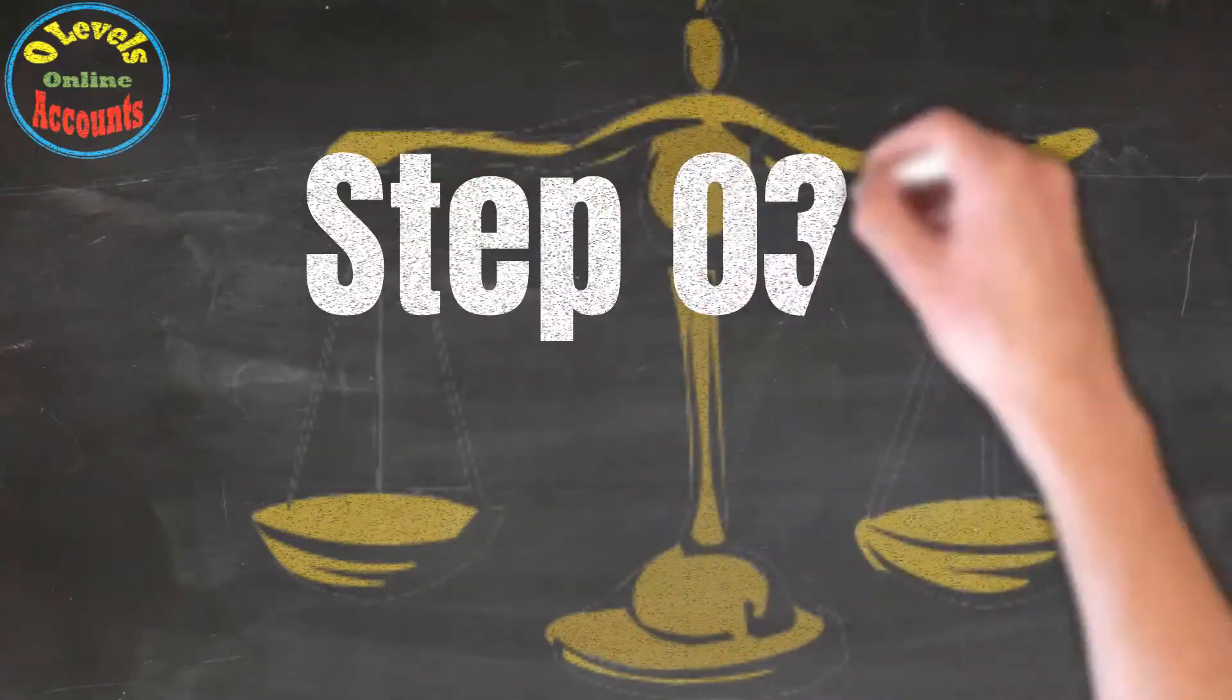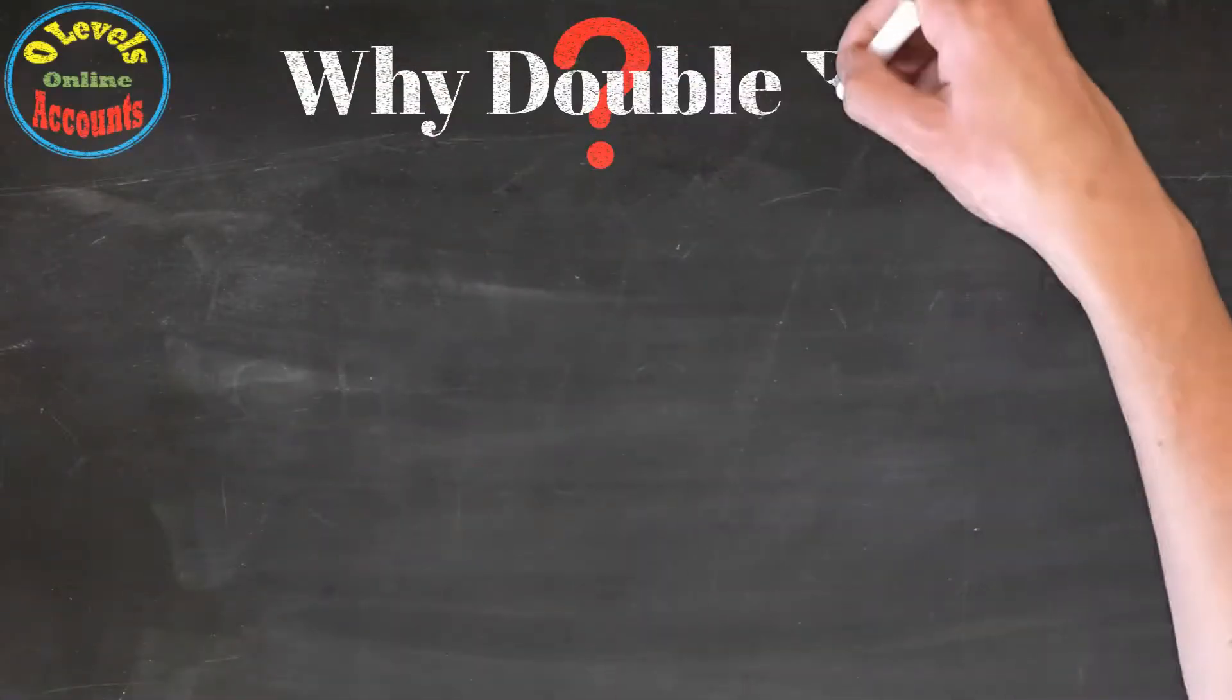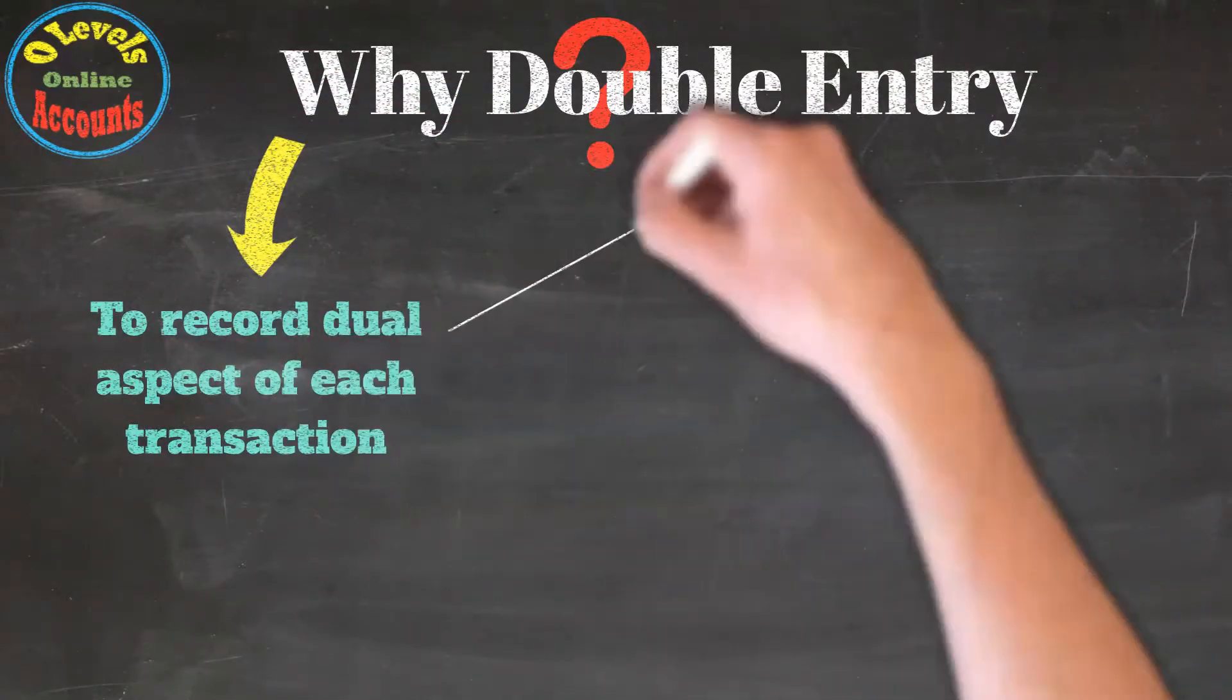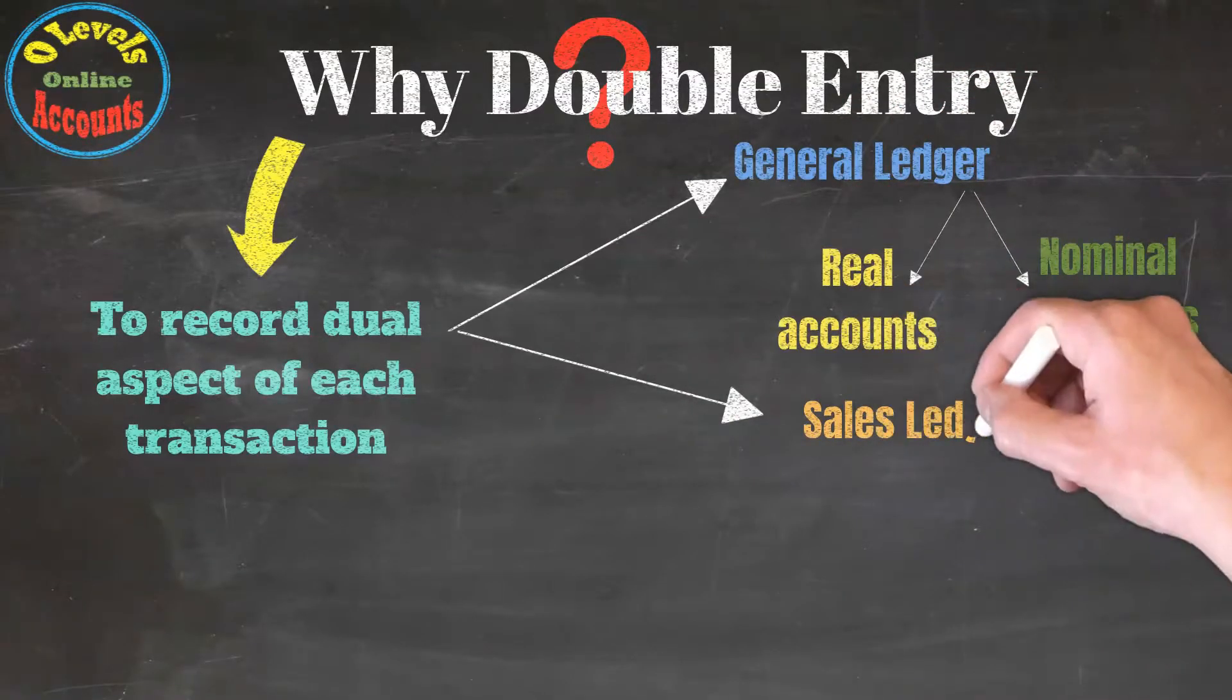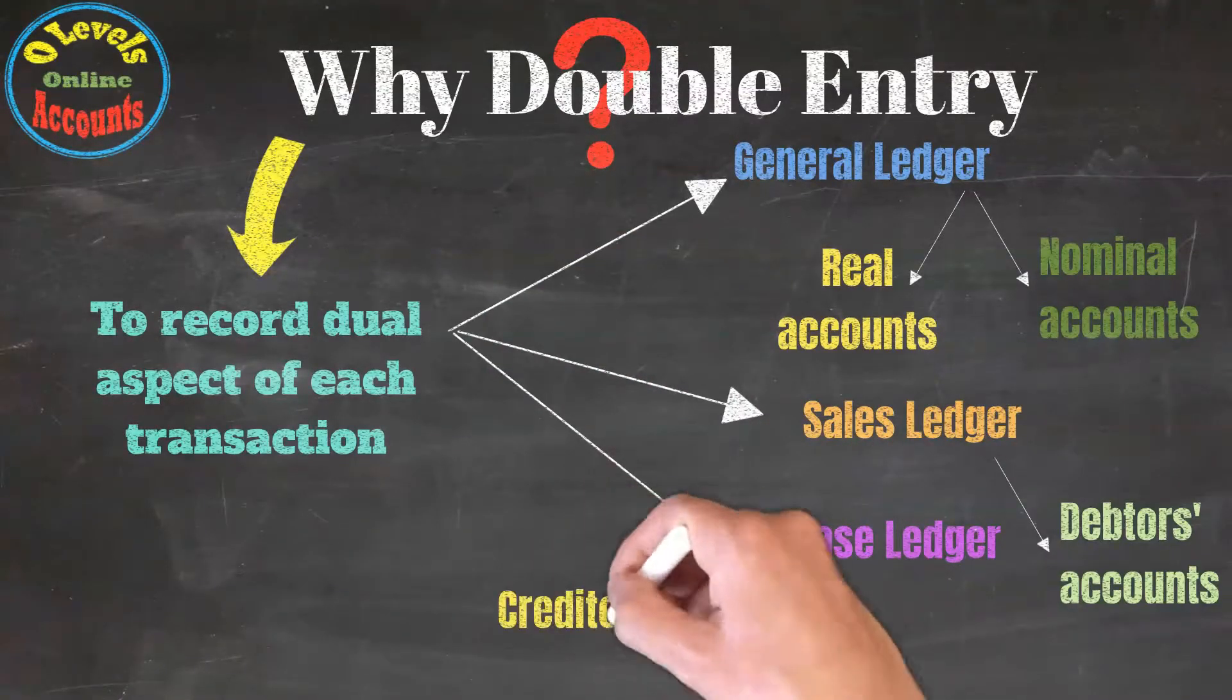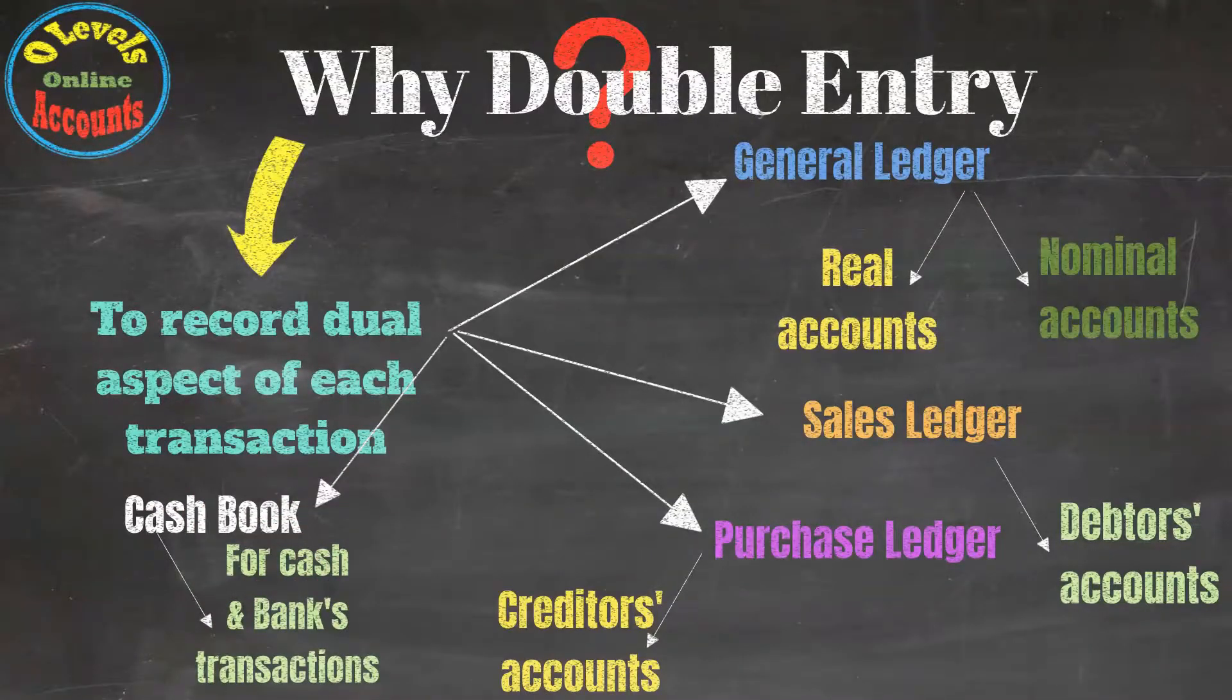The third step is making double entries to record the dual aspect of each transaction. For this purpose, we use ledgers. The general ledger includes real and nominal accounts. The sales ledger contains debtor accounts. The purchase ledger contains creditor accounts. And the cash book records cash and bank transactions.